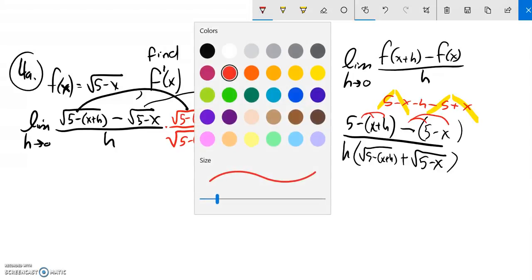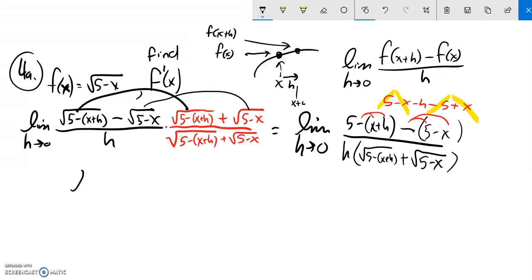So I'm left with just a negative h in the numerator, which is great because then now I can do some canceling. So let me just rewrite what I have. Negative h over h times this mess.